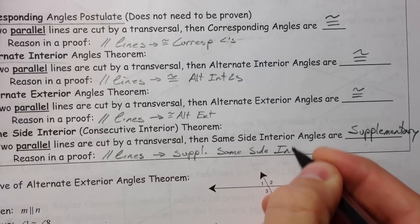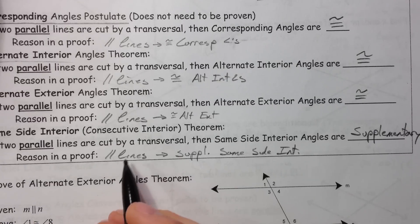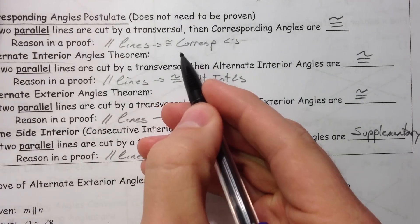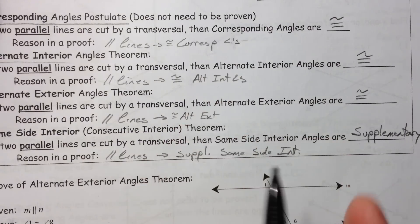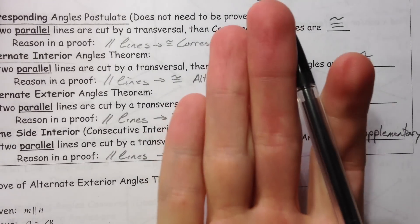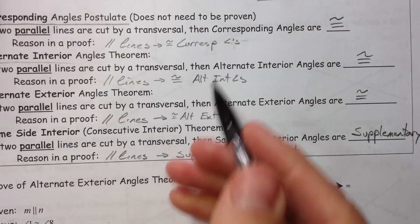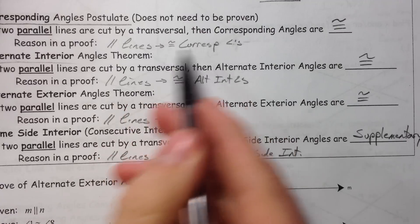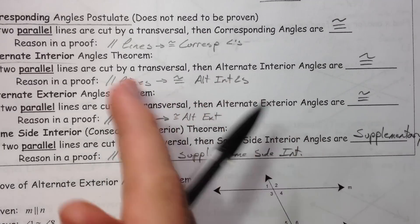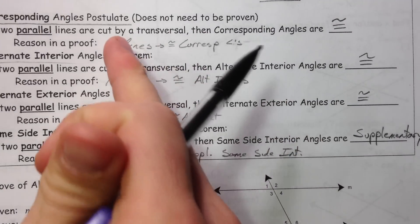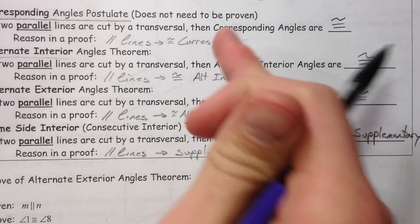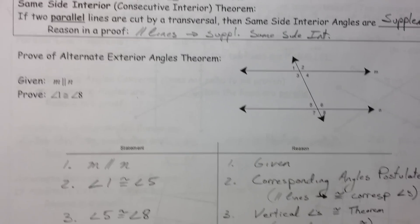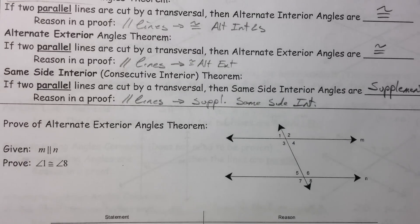I like doing it this way because parallel lines give me these things. What we're going to talk about next is that the converse is true: if I have congruent corresponding angles, then I have parallel lines. I like using these because I remember — if I have this, then I know this — and I don't assume something that I don't know.